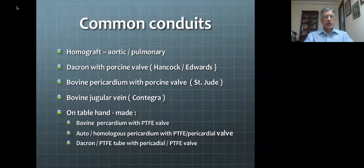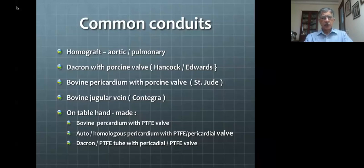There are also many conduits which can be made in the operating room itself. Many surgeons prefer this for reasons of economy and availability. You can get sheets of bovine pericardium, make a tube, and create a valvular structure inside with either autologous pericardium or thin PTFE membrane. You could do the same using a Dacron or PTFE tube with a pericardial or PTFE valve inside. Essentially, you need a tube and a functioning valve within it — that constitutes a conduit.